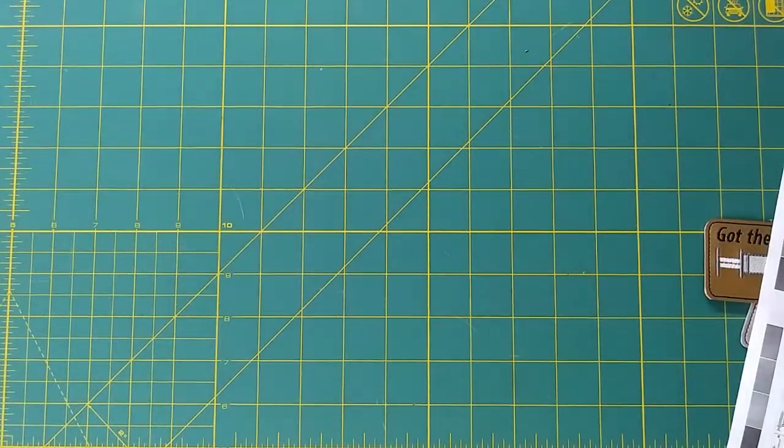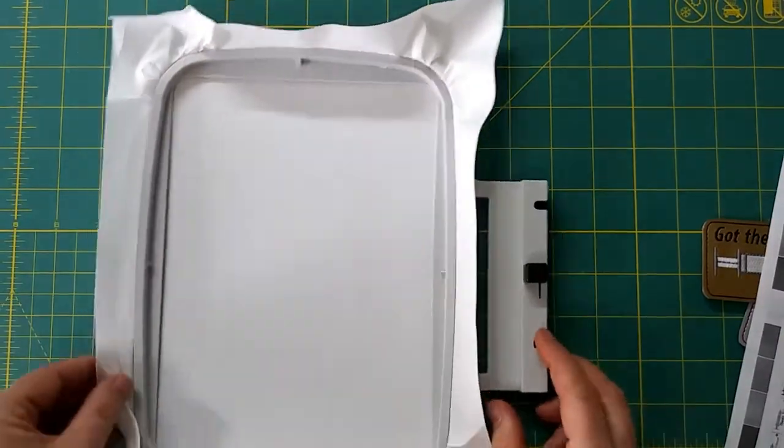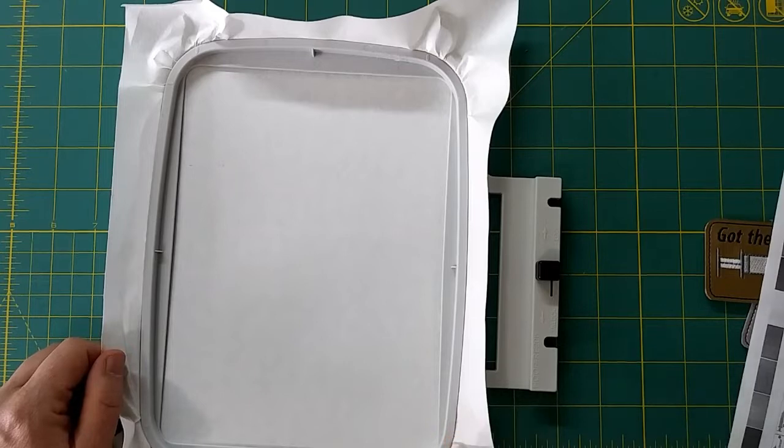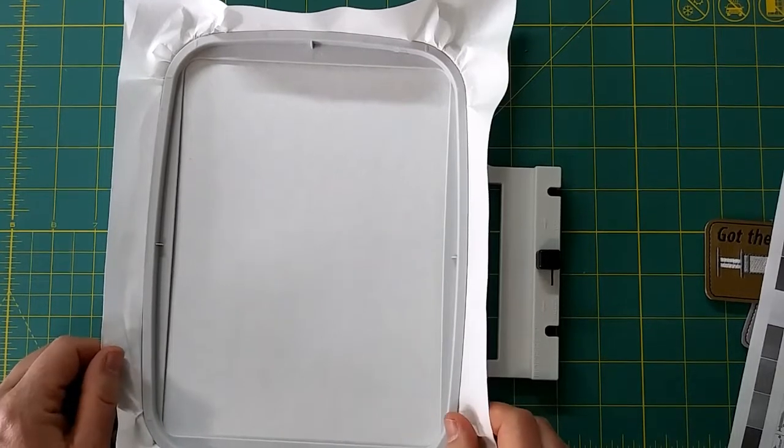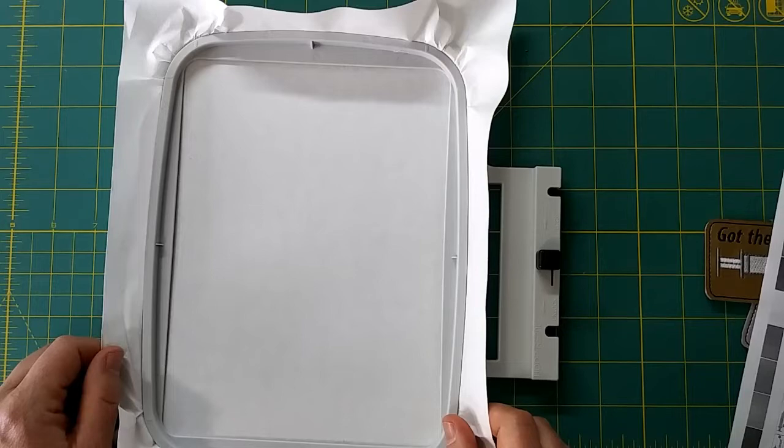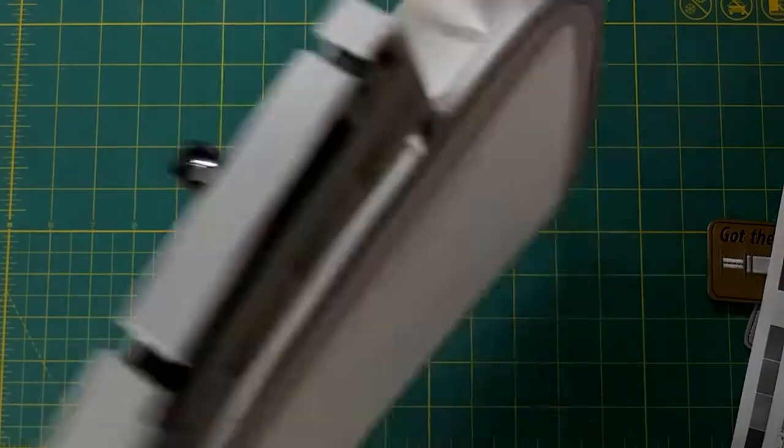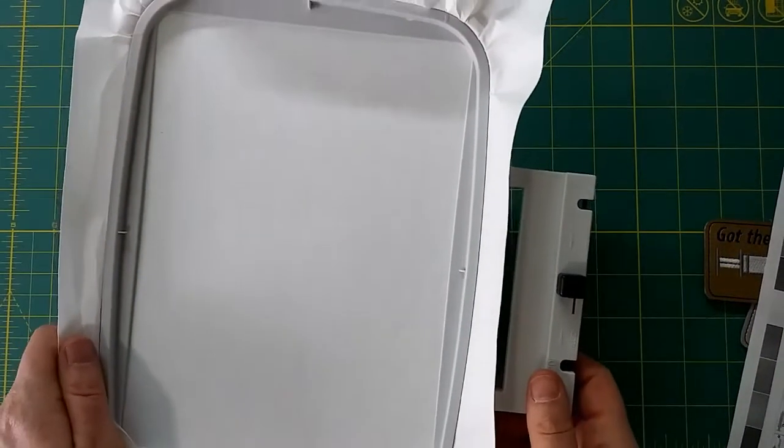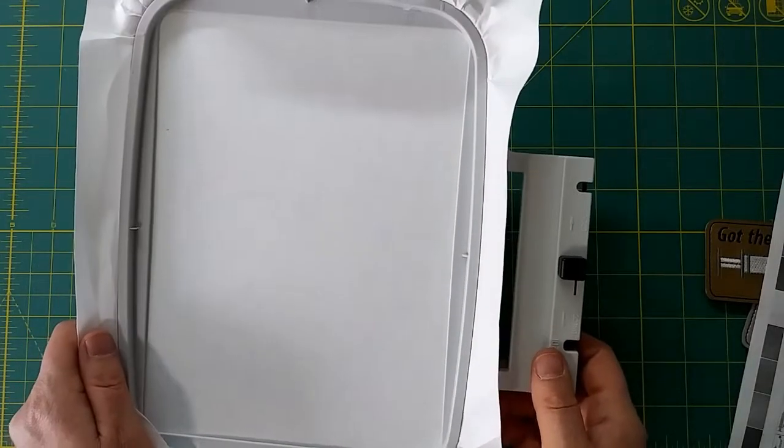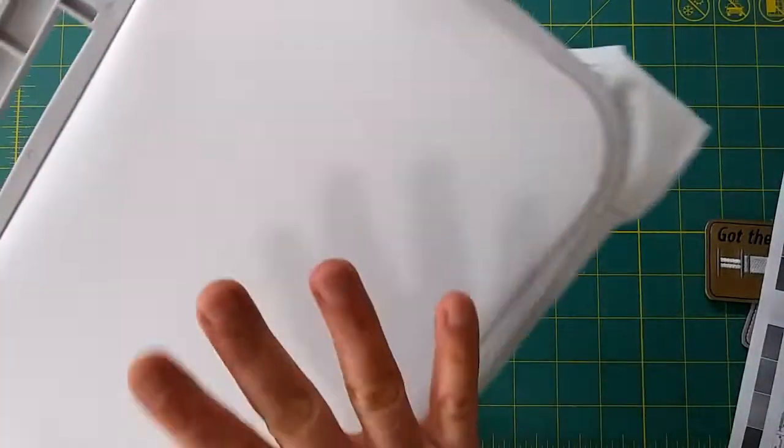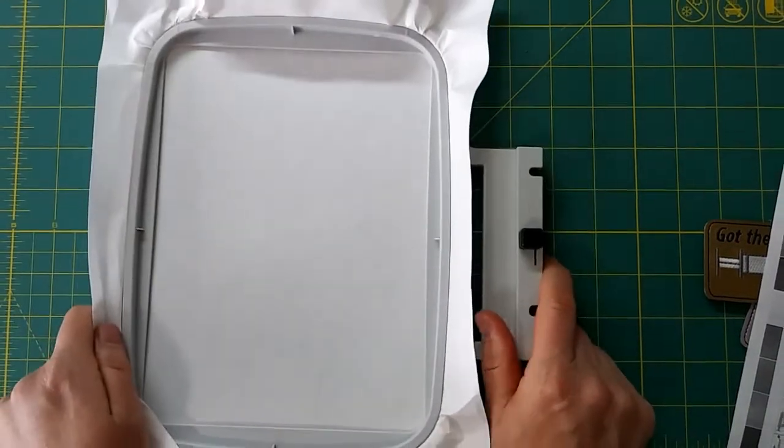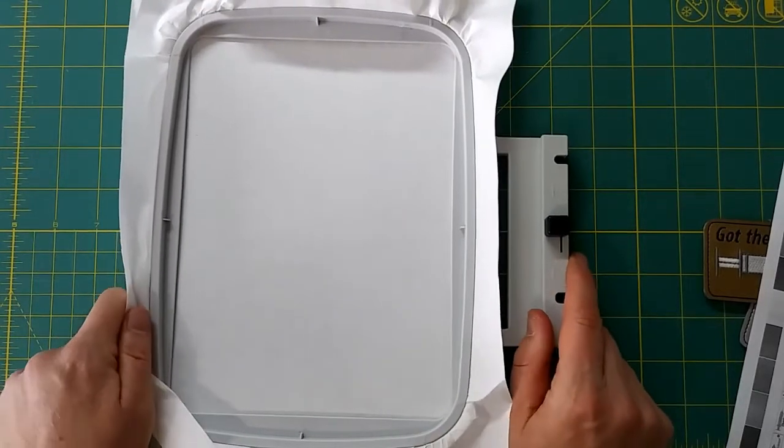Next you are going to want to hoop up some stabilizer. I'm using a craptastic tear away for this project. I tend to buy really stable vinyl because I don't like fighting with stretchy soft vinyl. If you're using something stretchier or softer then you probably want to use a cutaway. So hoop it tight. If you can't make that sound on the back it is not tight enough. And I'm going to take this over to the machine and stitch our placement run.